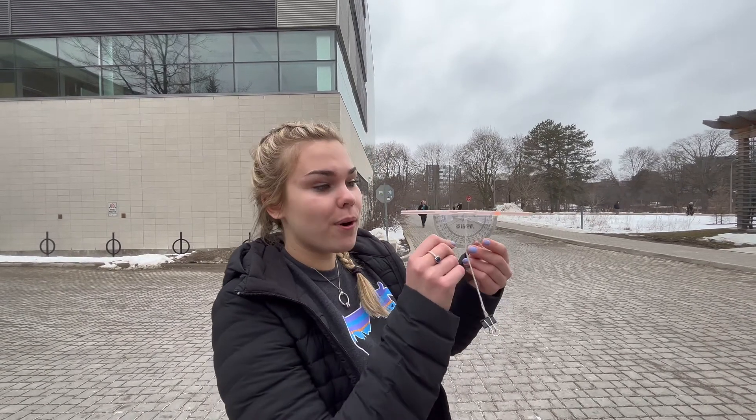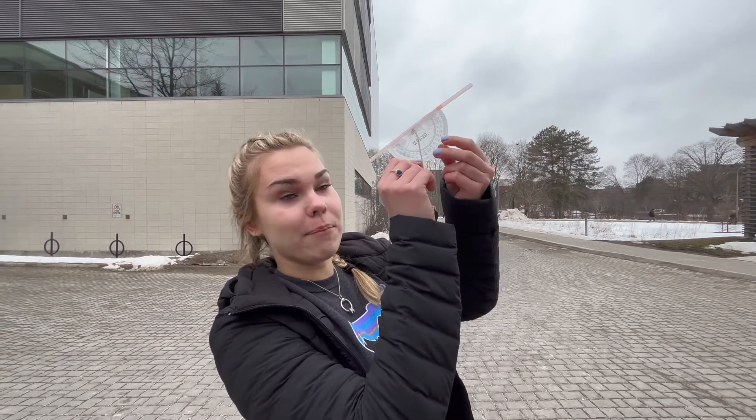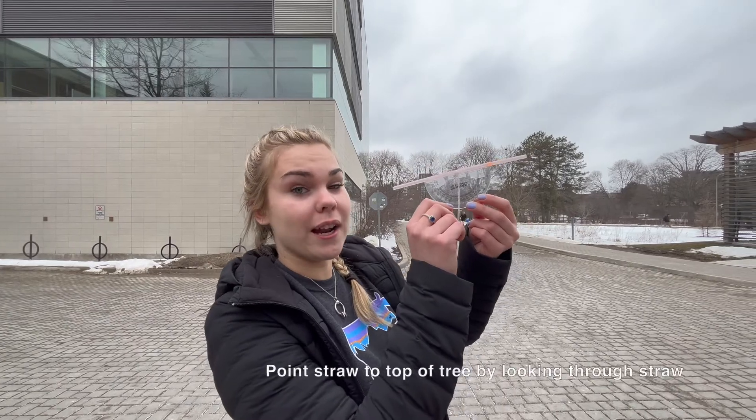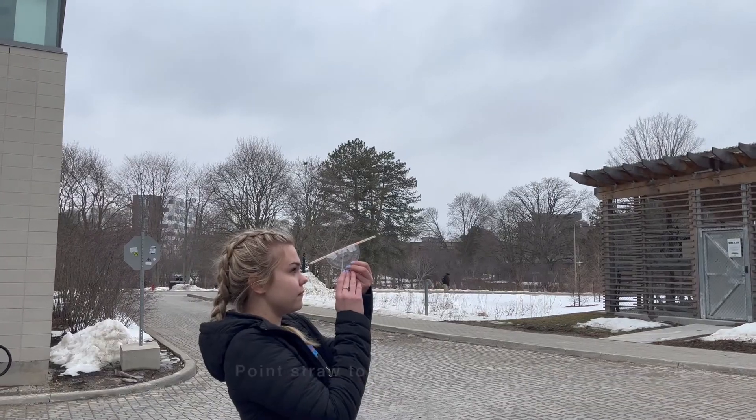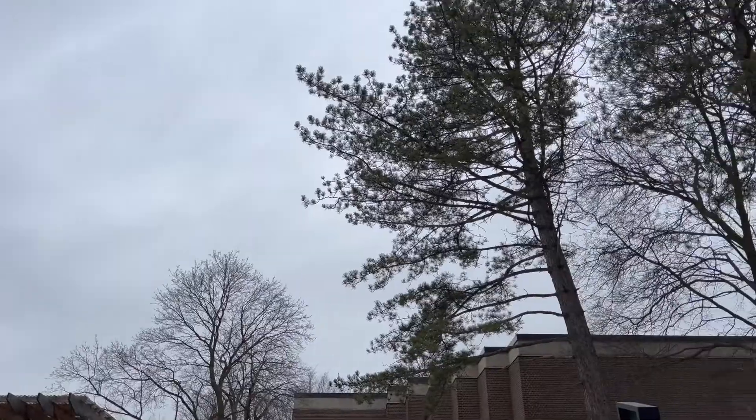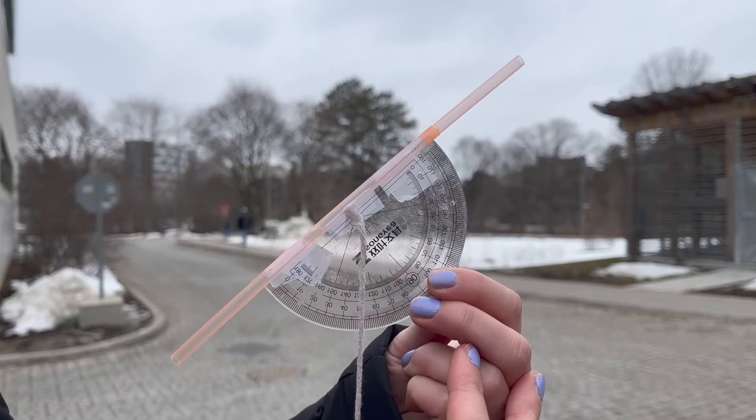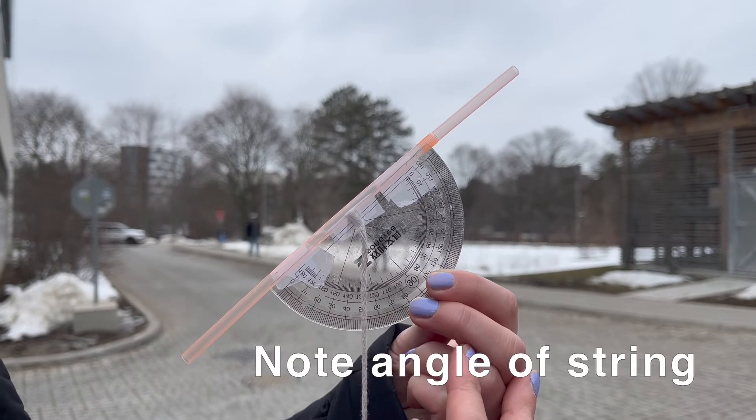Okay so to use the clinometer what you're going to do is you're going to want to point the straw to the top of the item that you're measuring and close one eye like this. As you can see the clinometer hits 50 degrees.